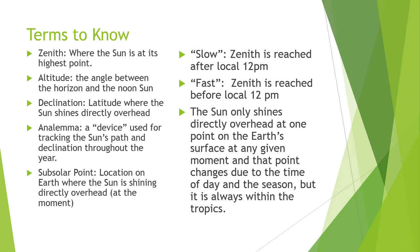When you're talking about the sun and Earth, there are some important terms to know. If you're going to calculate where the sun is directly overhead — which is always going to be between 23.5 degrees north and 23.5 degrees south — you need to know these words. Zenith is where the sun is at its highest point. Altitude is the angle between the horizon and the noon sun — I also call this elevation sometimes. Declination is the latitude where the sun shines directly overhead. An analima is a device used for tracking the sun's path and declination throughout the year.